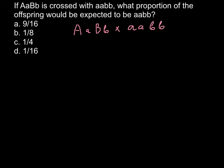The first method is the express method. We consider each allelic pair separately. So here we have one allelic pair for parent 1 and another one, and for parent 2 also one allelic pair and another. When we consider allelic pairs separately, we do a Punnett square for each pair separately. Here we would have capital A and small a for parent 1.